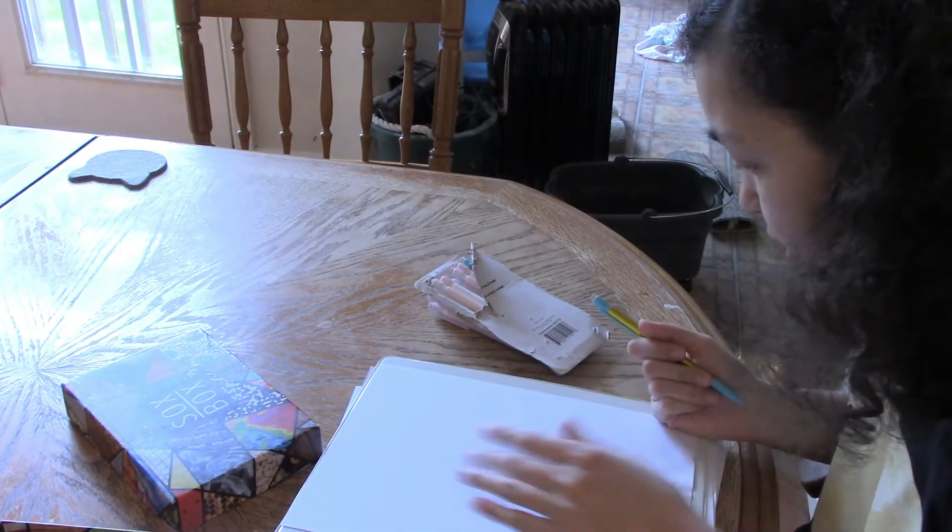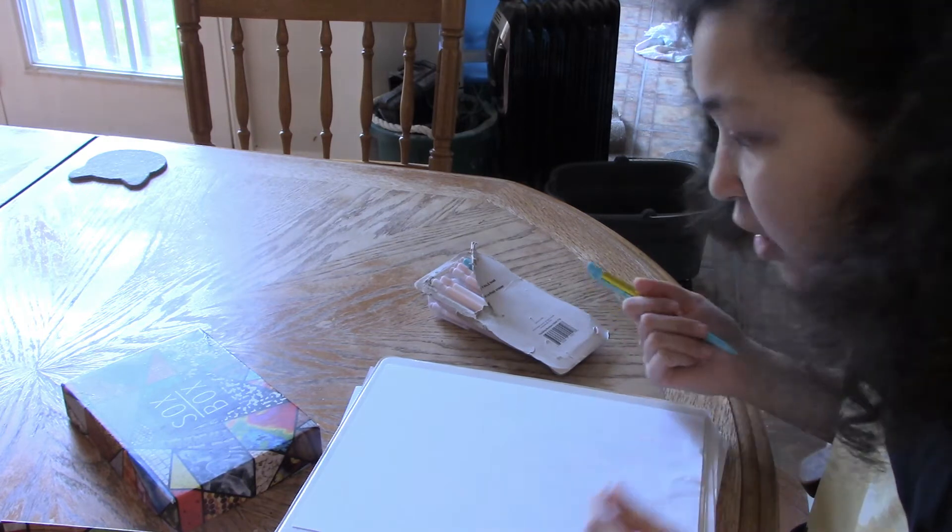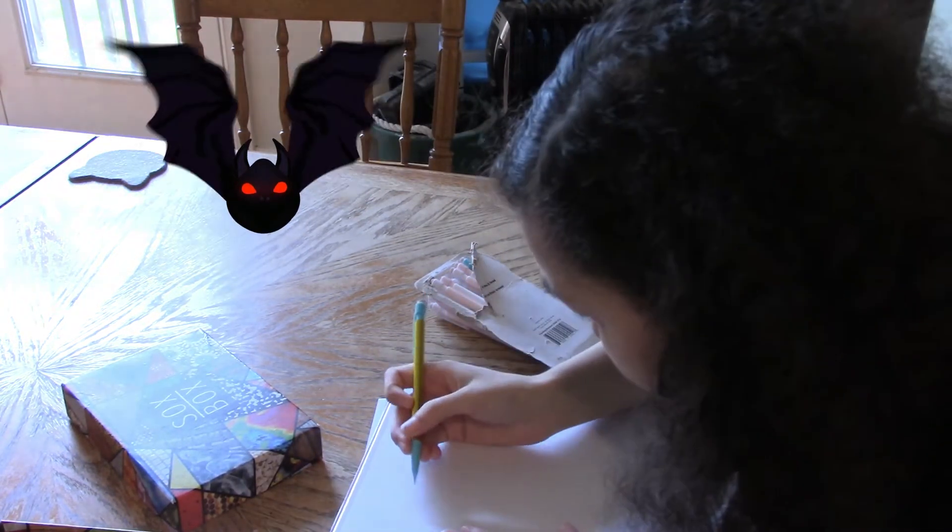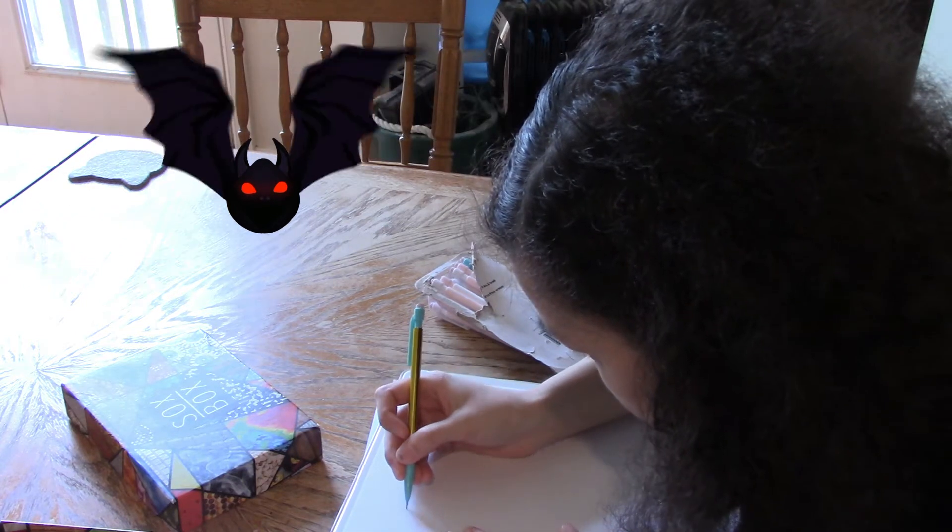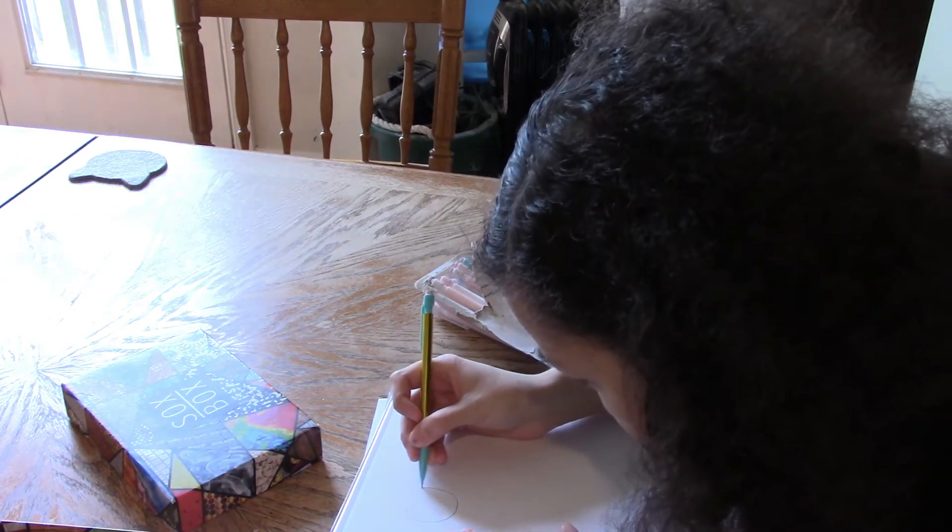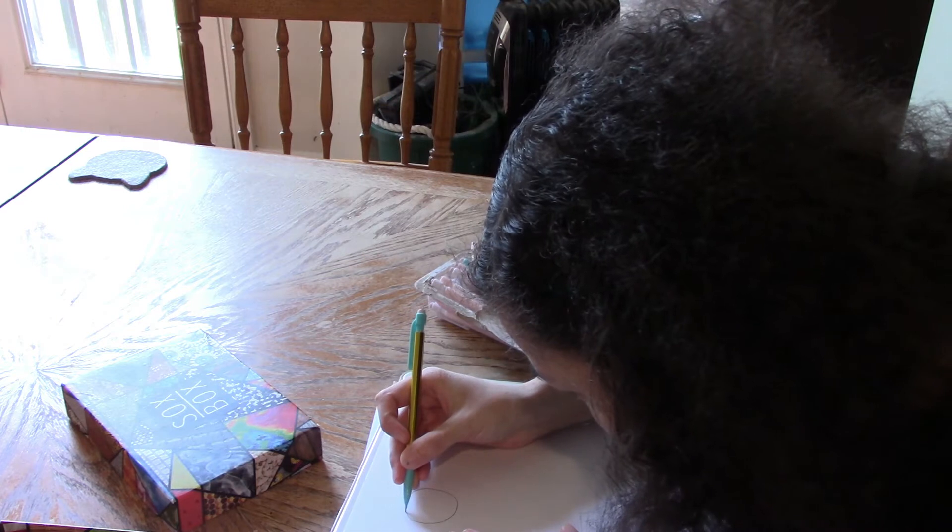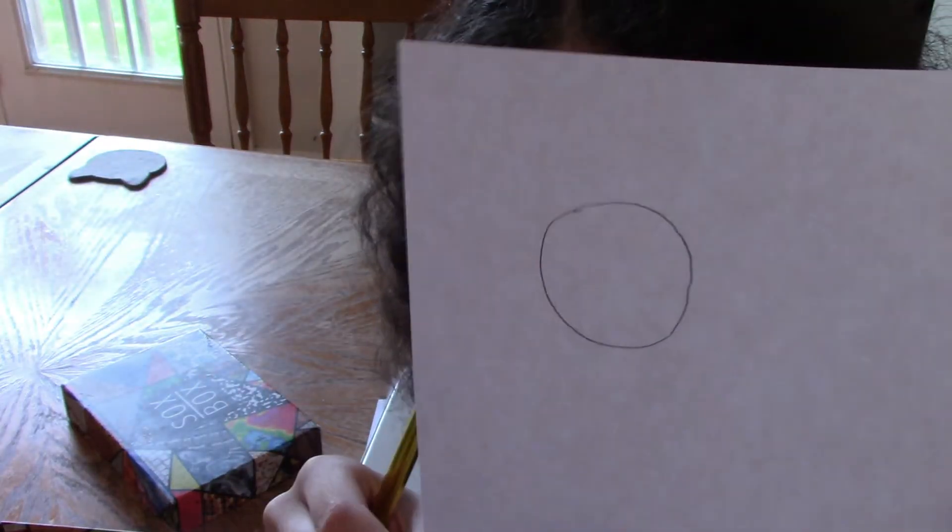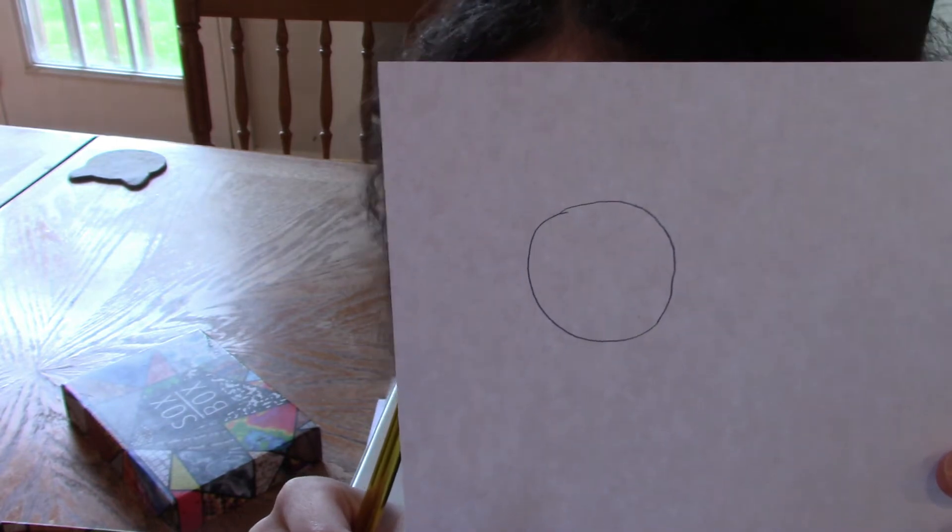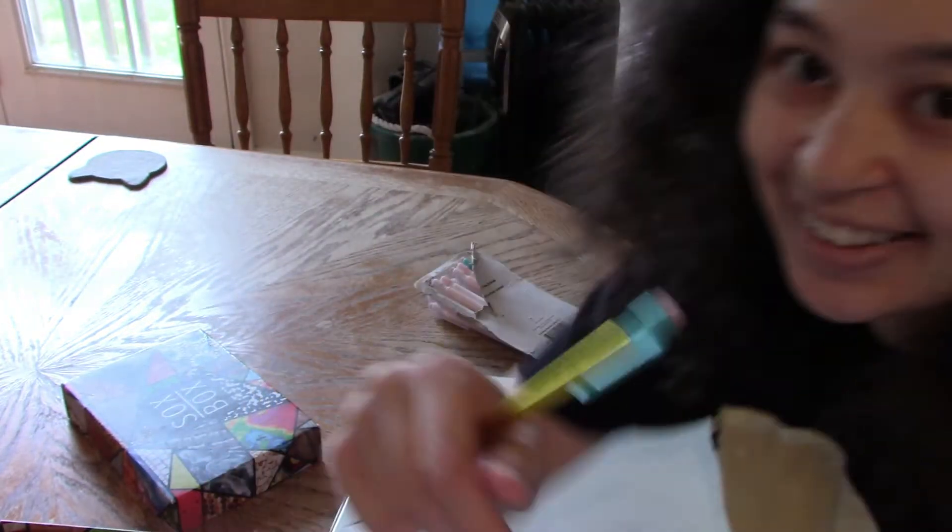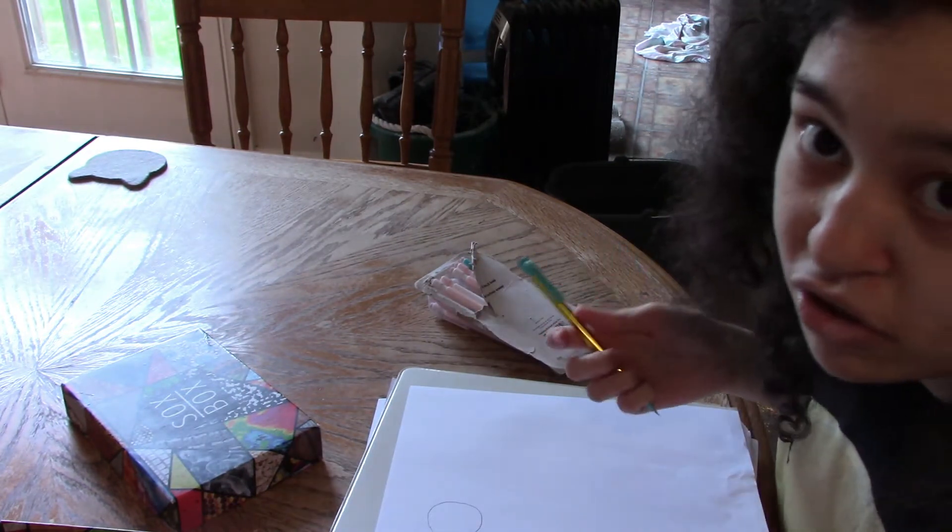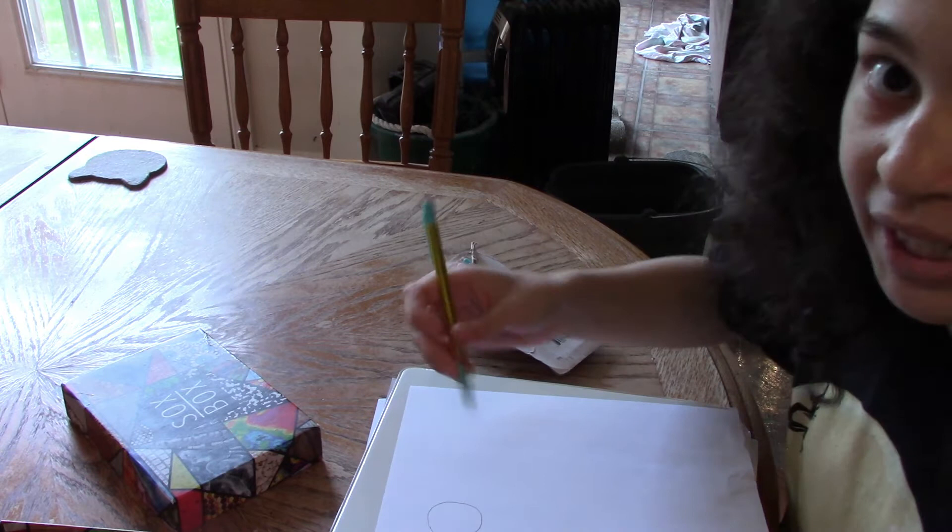So the first shield I'm going to show you guys will be a circle shield. So that's easy. We just draw a simple shape. If you're not comfortable with doing circles, then you can use a compass I guess. Except that I'm not very good at using compasses. So I just do it by hand.